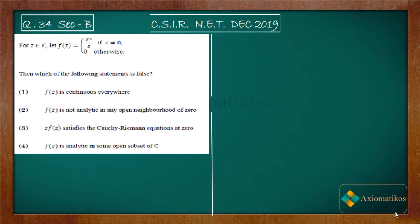Hello dear students, welcome to ExeoMeticos. This video is part of the solution series for CSIR NET December 2019, and we are doing Problem 34 of your paper. It's a problem of complex analysis. The question asks which of the following statements is false, so please mark this — because the question is asking for a false statement, it becomes a little difficult sometimes to prove which option is incorrect.